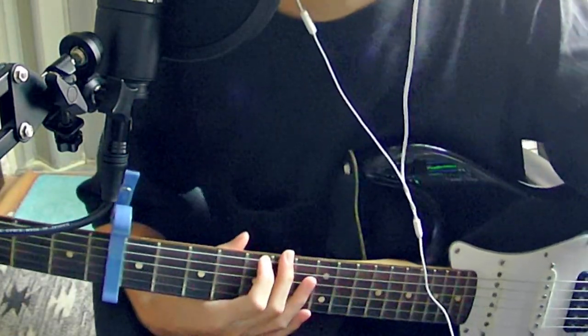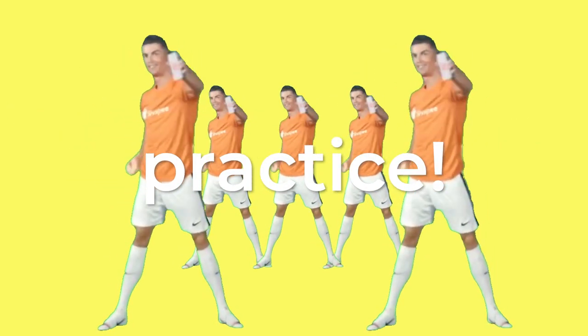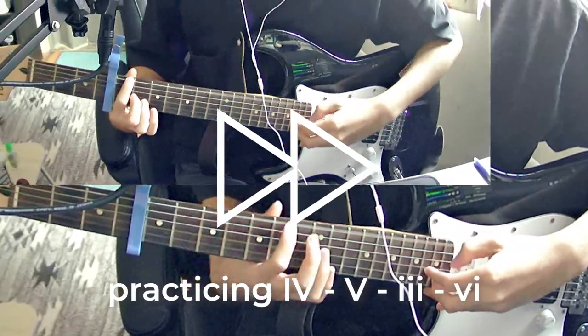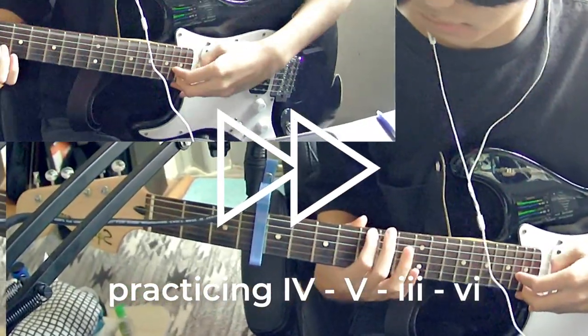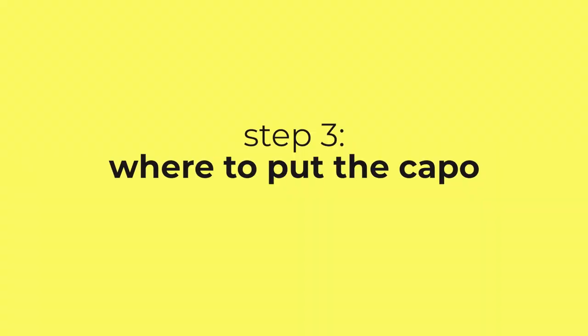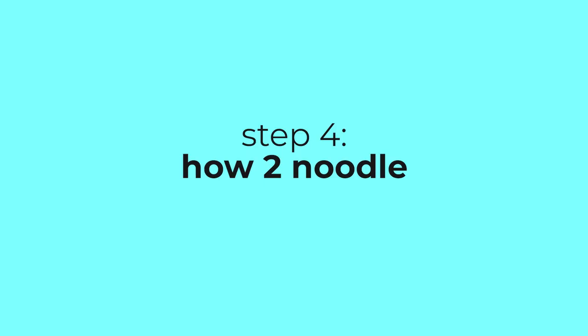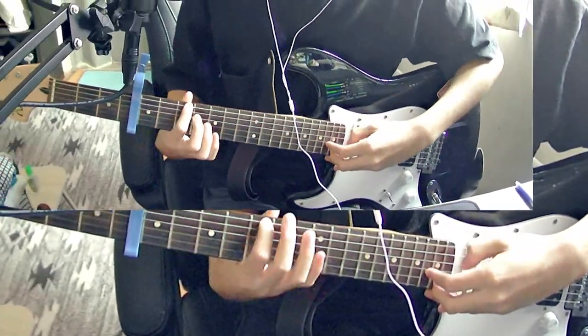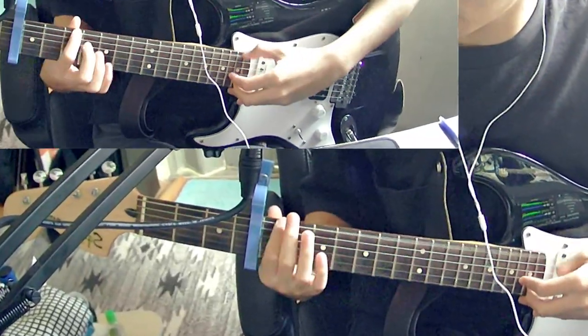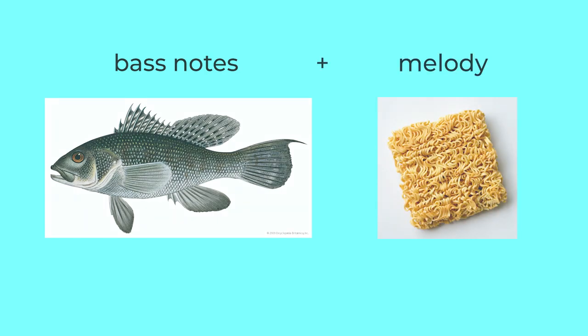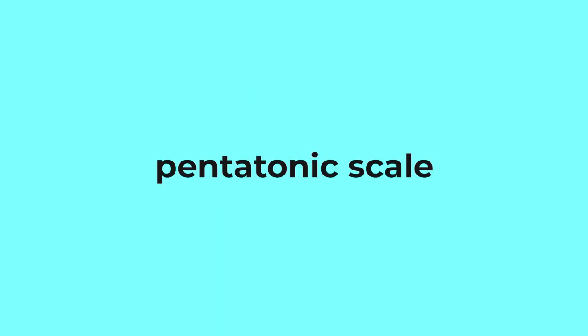Back to the video. So what I want you to do now is practice playing the bass notes. And yeah, that is step 1, done. How to noodle. Just now I taught you how to play the bass notes, but you're not just going to be playing bass notes — you're also going to be playing a melody on top of it. Unfortunately, there is no easy way to do this, but what I recommend doing is to learn the pentatonic scale.